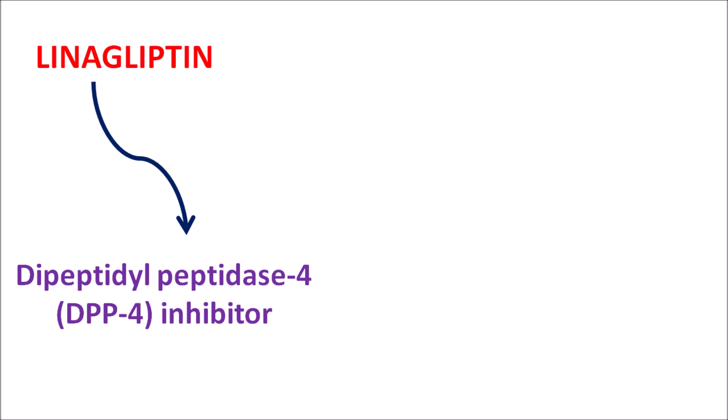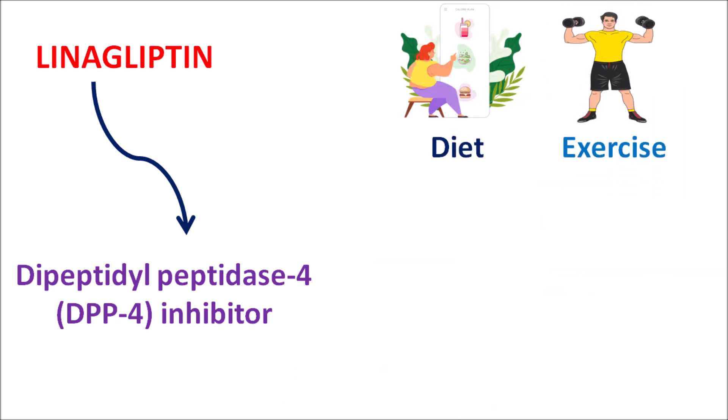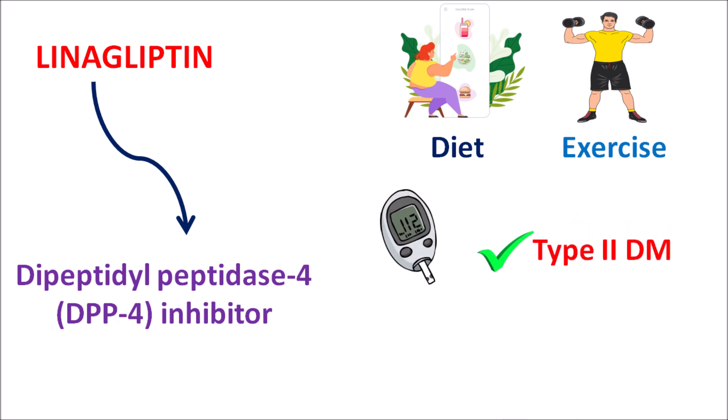Linagliptin can control the glucose levels by increasing the insulin secretion. That's why this drug can be indicated in patients along with proper diet and exercise to treat type 2 diabetes mellitus. This linagliptin is available as a tablet form which can be taken either with food or without food, and this drug can also be combined with other anti-diabetic agents to produce efficient control on the blood glucose levels.